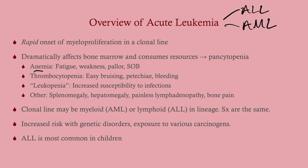What you'll have is an anemia, a thrombocytopenia and all the symptoms that come with it, and then a functional leukopenia. You may have a high white count on your CBC, but that high white count is artificial because those are all cancer cells - they're not working. So functionally they are leukopenic and they're going to have a hard time fighting off infections. You can also have more nonspecific symptoms: splenomegaly, hepatomegaly, lymphadenopathy, bone pain, and constitutional B symptoms like fever, weight loss, and night sweats.